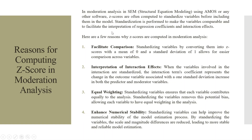In moderation analysis, Z-scores are often computed to standardize the variables before including them in the model. Standardization is performed to make the variables comparable and to facilitate the interpretation of regression coefficients and interaction effects. Standardizing variables converts them into Z-scores with a mean of 0 and a standard deviation of 1, allowing for easier comparison across variables — essentially leveling the ground so we can compare the effects of the two variables.